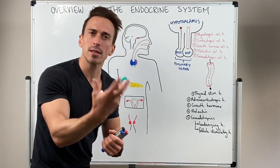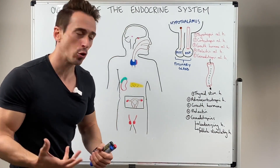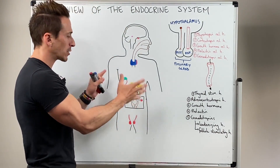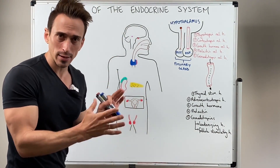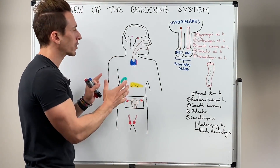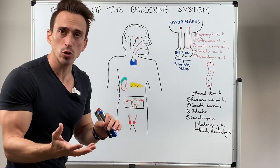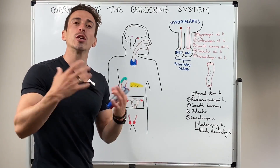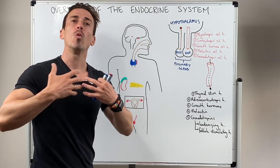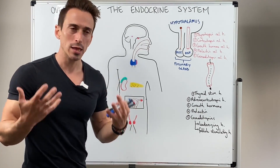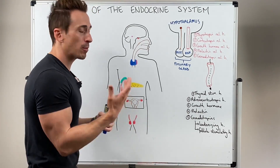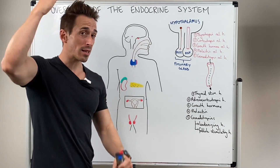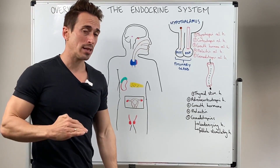Now the cells or glands that produce and release these hormones — that's what we're going to have a look at today. We're going to look at some of the names of those hormones and generally speaking what they do in the body. So to begin, we should start at the top and move our way down.